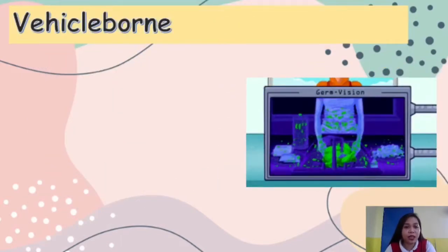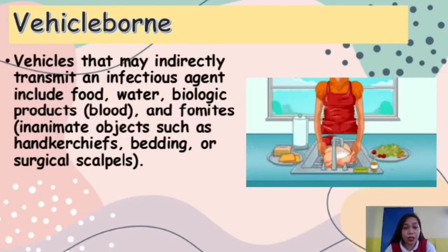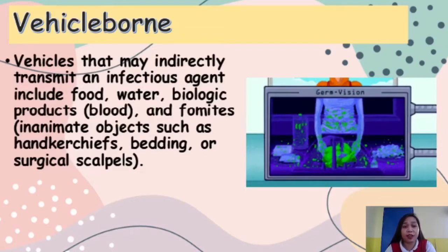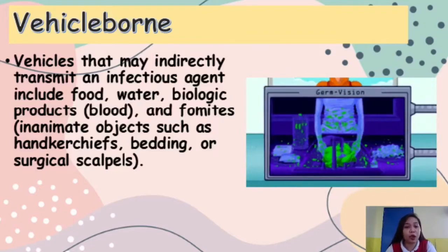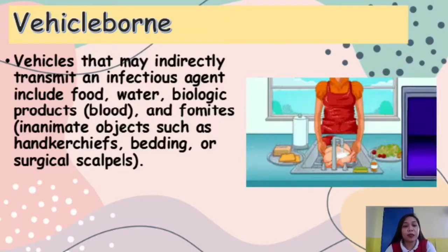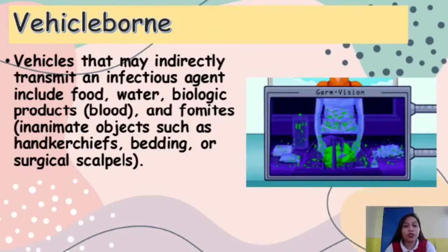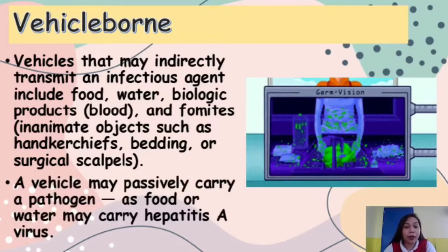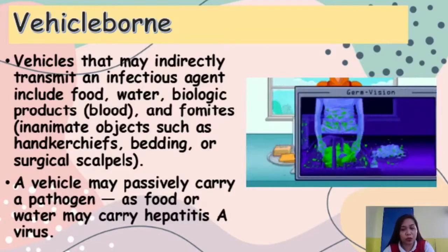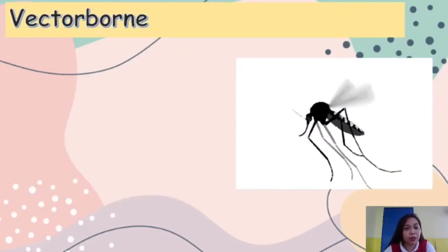Vehicles that may indirectly transmit an infectious agent include food, water, biologic products such as blood, and fomites — inanimate objects such as handkerchiefs, bedding, or surgical scalpels. A vehicle may passively carry a pathogen, as food or water may carry the hepatitis A virus.